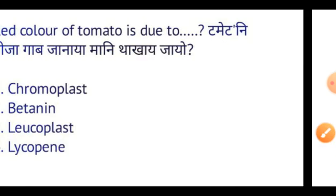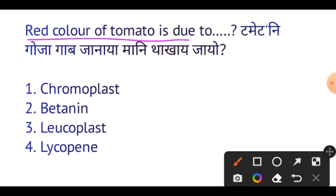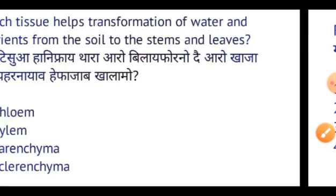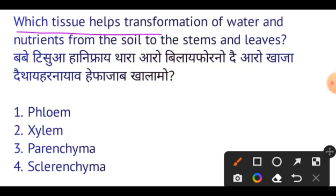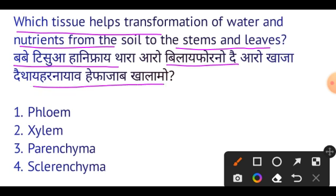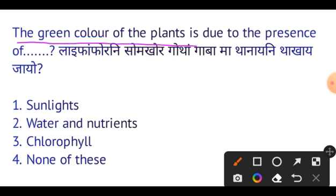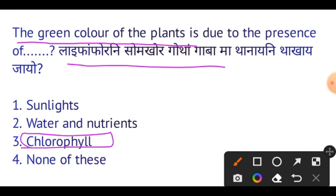Next question: Red color of tomato is due to Lycopene — important. Next question: Which tissue helps in the transformation of water and nutrients from soil to stems and leaves? The answer is Xylem. Next question: The green color of plants is due to the presence of Chlorophyll — important.